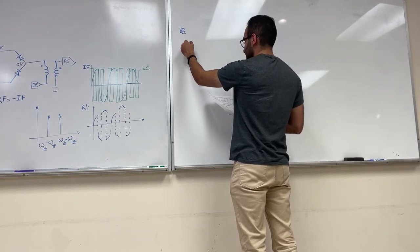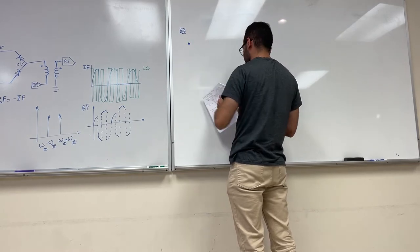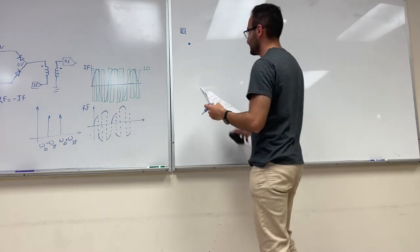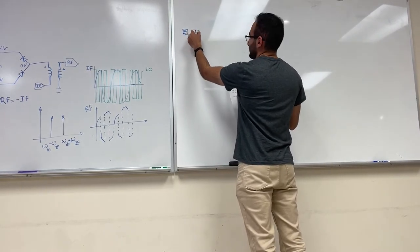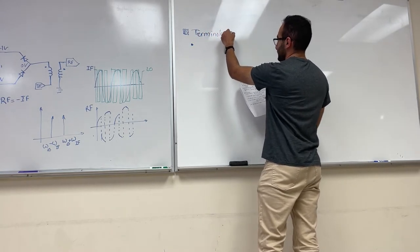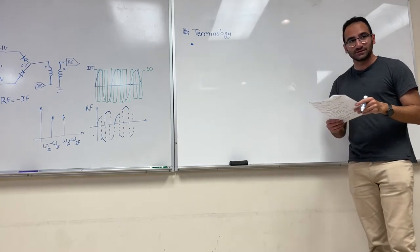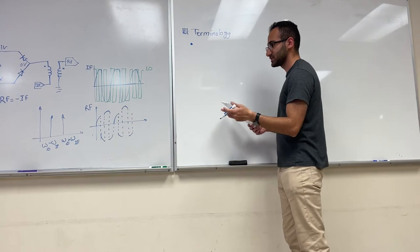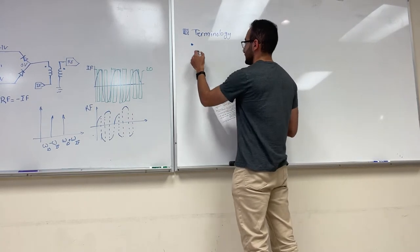Before we get to the types, let's talk about some terminologies so we don't confuse you. When comparing two mixers, there are certain properties we use to say which mixer is better. The first one is conversion loss — or it could be gain as well.